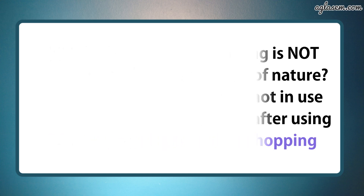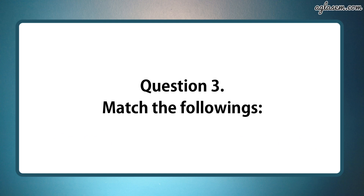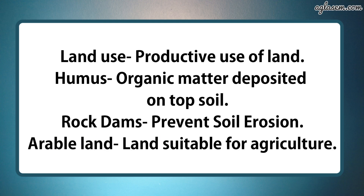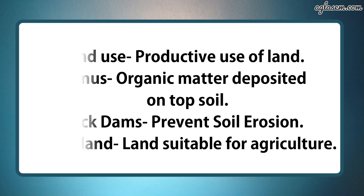Moving to question number three, match the following. Part one, land use — answer is productive use of land. Second, humus — answer is organic matter deposited on top soil. Third, rock dams — answer is prevent soil erosion. Fourth, arable land — answer is land suitable for agriculture.